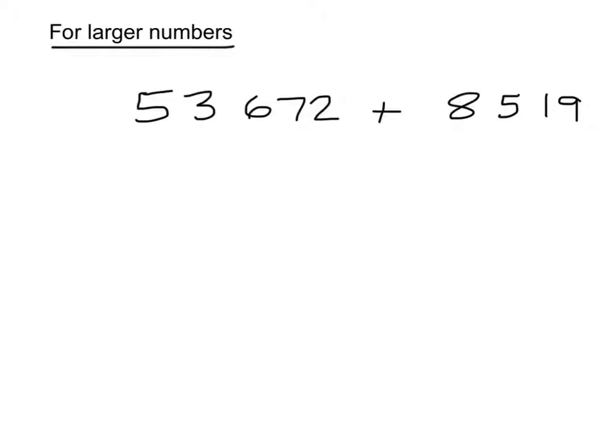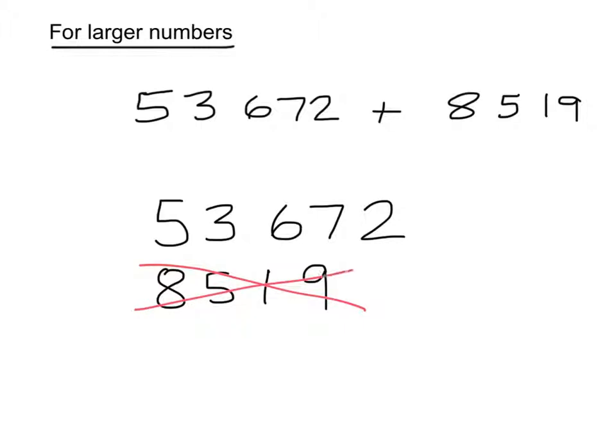We really would recommend that they use the column addition way for this. Making sure that these are written in the right columns, the most obvious mistakes here is that someone would write down 53,672 and then start writing 8, 5, 1, 9, like that. But that would be wrong. What should happen here is that you take care to make sure that numbers in the same place value go in the same column.